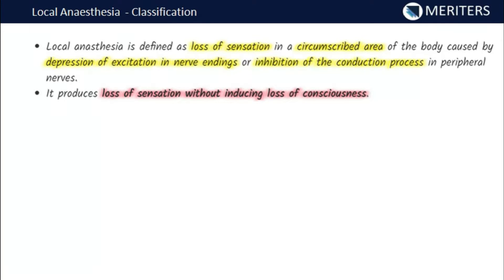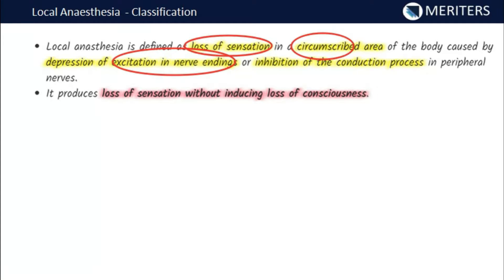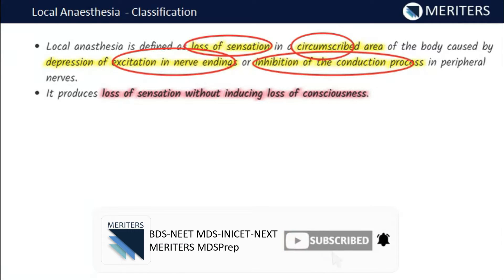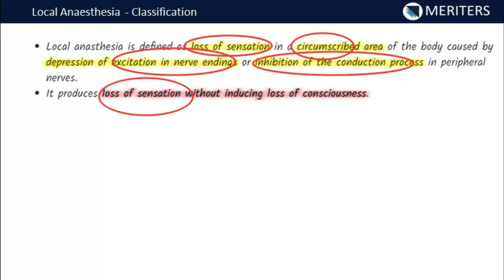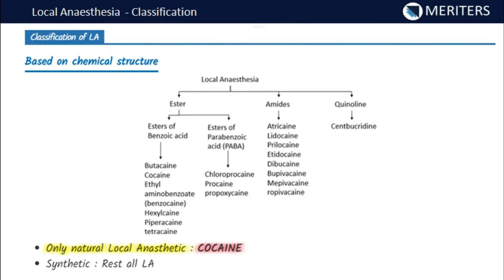Local anesthesia is defined as the loss of sensation in a circumscribed area of the body, caused by depression of either excitation in nerve endings or inhibition of conduction of impulses in peripheral nerves. It produces loss of sensation in a circumscribed area without inducing any loss of consciousness.